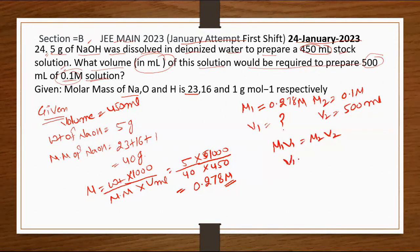The value will be M2V2 upon M1. What is the value of M2? That is 0.1. Value of V2, that is 500. Value of M1 is 0.278. When we do this calculation...